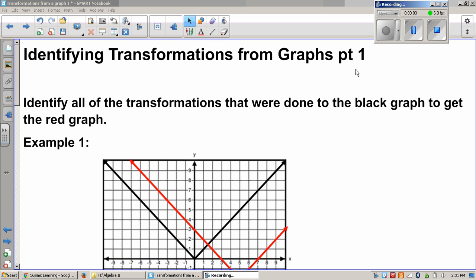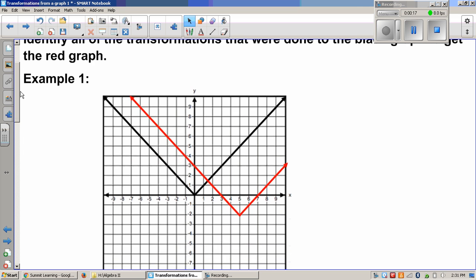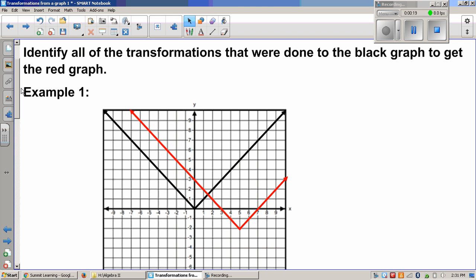When you're identifying transformations from a graph, oftentimes they tell you that you're moving one function to another, and they will use different colors to signify the different functions. In one of the questions that you're going to see on the content assessment in this focus area is that you're simply identifying the type of transformation that's shown moving one graph to another. So let's take a look at example one.